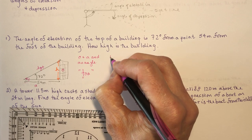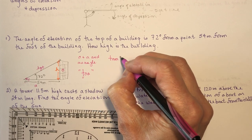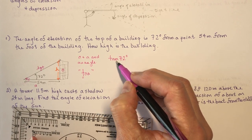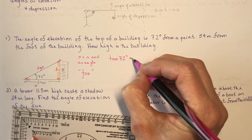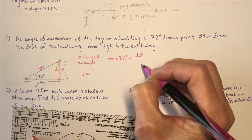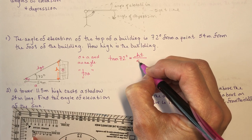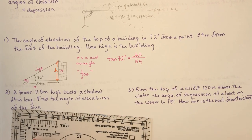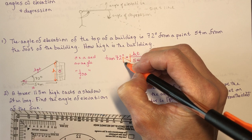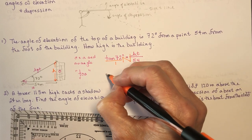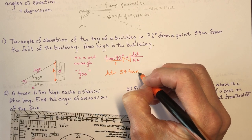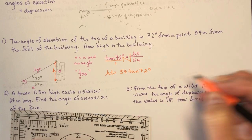So: tan(72°) = opposite / adjacent = height / 54. Solving for height: height = 54 × tan(72°). Remember you need to write in the angle — tan of something.